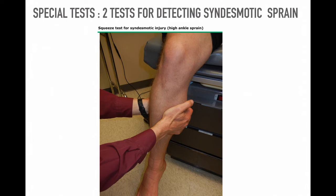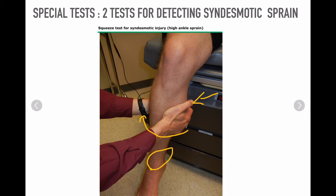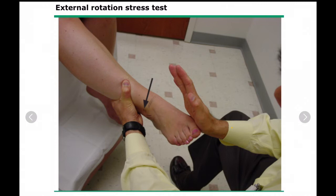First, the squeeze test for syndesmotic injury. To perform it, place the heel of each hand just proximal to the midpoint of the calf and compress the tibia and fibula by squeezing in an anteromedial to posterolateral direction. A positive test is marked by reproduction of pain in the distal syndesmosis, just above the ankle joint.